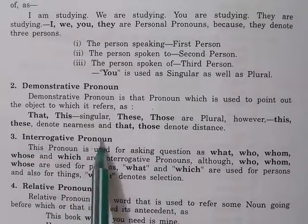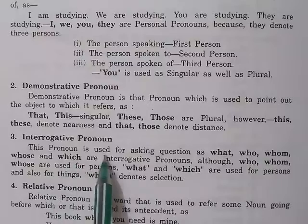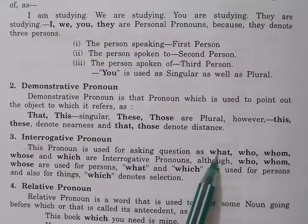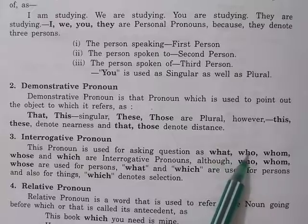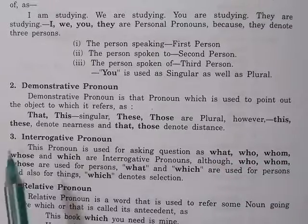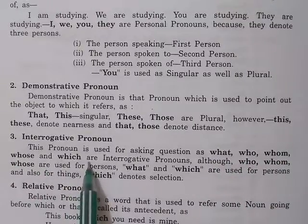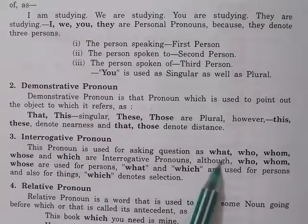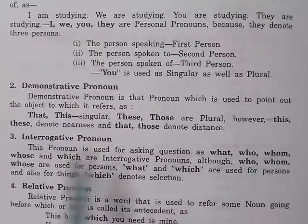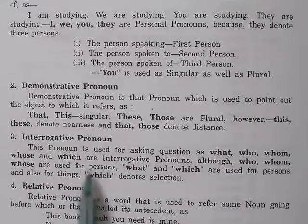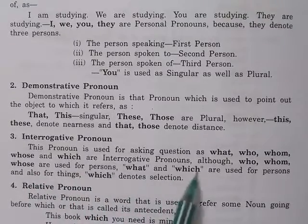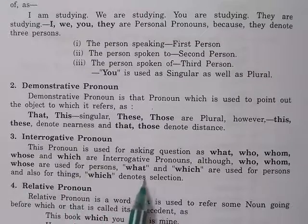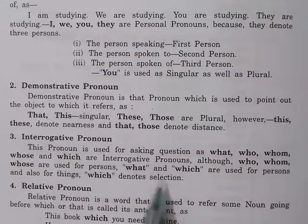The third one is interrogative pronoun. This pronoun is used for asking questions — what, who, whom, whose, and which are interrogative pronouns. Who, whom, and whose are used for persons, while what and which are used for persons and also for things. Which denotes selection — which one?